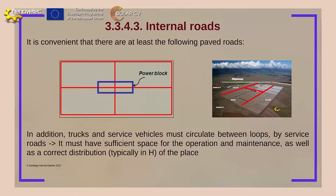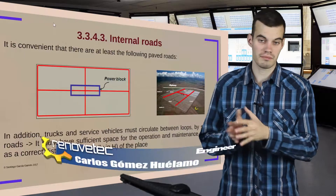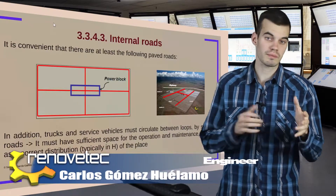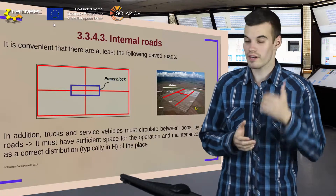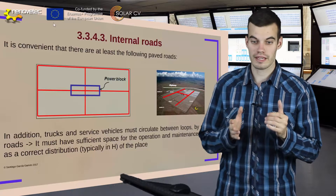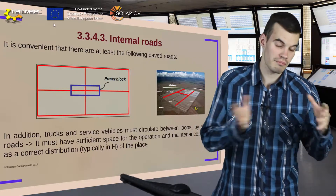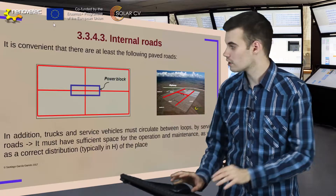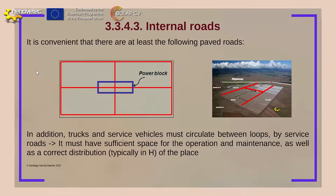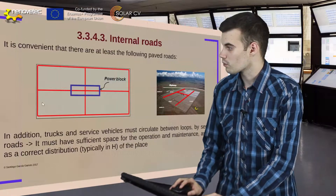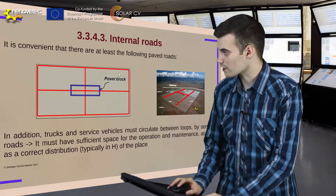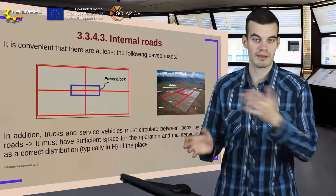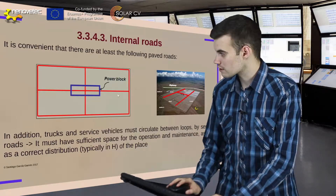Another concept that must be understood is internal roads. Because the modules must be maintained due to dust particles, dirt, fractures, and other problems, they must be maintained with maintenance vehicles and cleaning vehicles, so we must have some internal roads. The most used shape for a solar thermal power plant solar field is the H shape, where we have the loops and the subfields here, and the power block here, so the maintenance and cleaning vehicles must circulate through these roads.